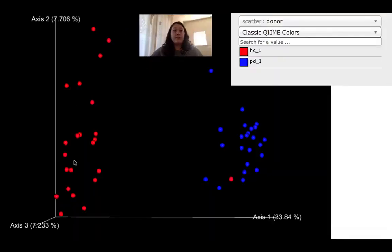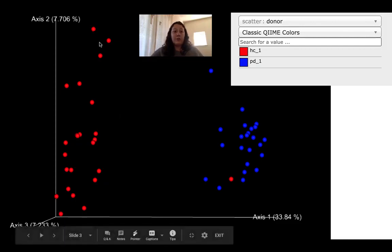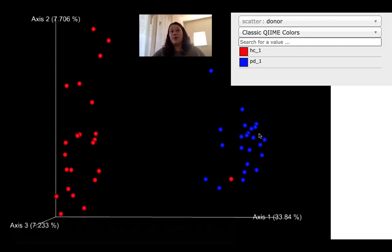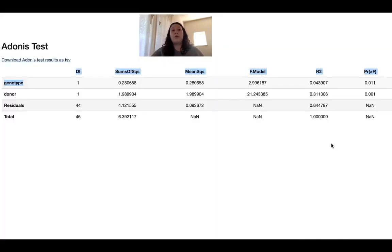In our beta diversity PCoA plot, we saw that healthy donor and Parkinson's mouse donor were significantly different, but it didn't show us that the genetic background of a mouse had much effect. When we ran the Adonis plot, we saw that the genotype had a pretty significant effect on beta diversity.